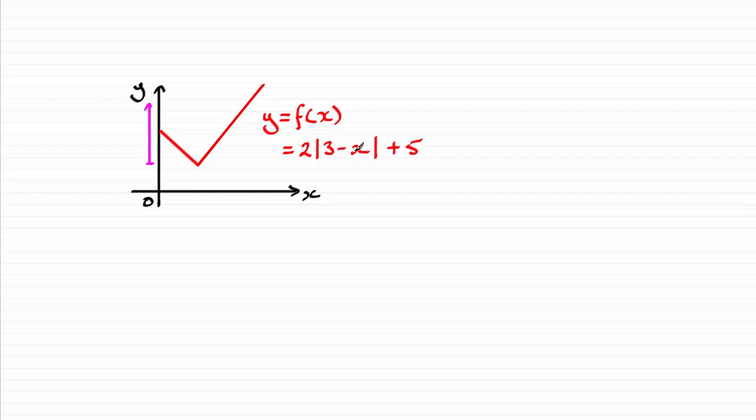We can easily see that that lowest point is when this is a minimum value and that's going to be when x is 3 because it'll make this term 0 and just give us 5.